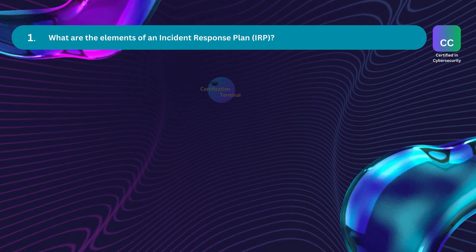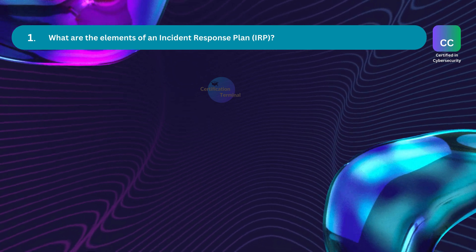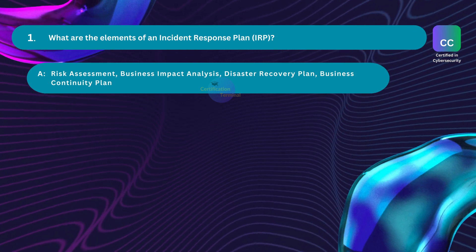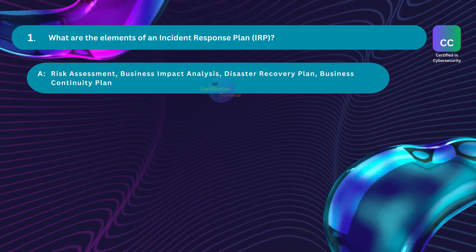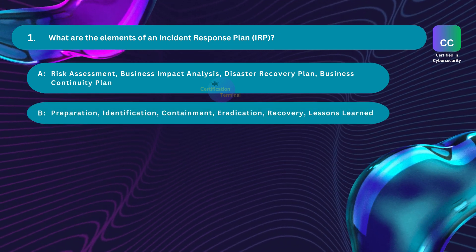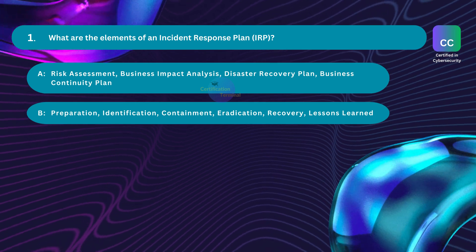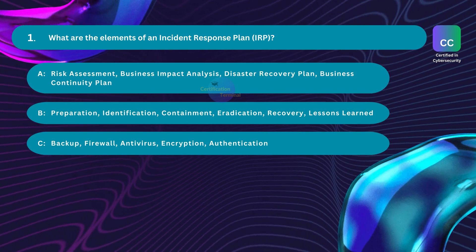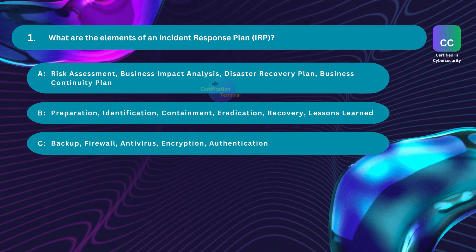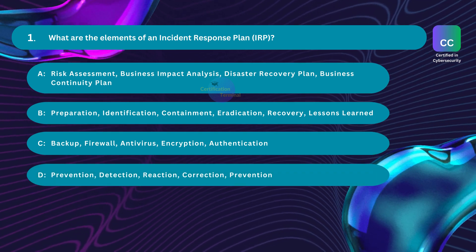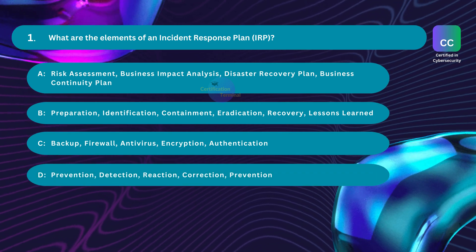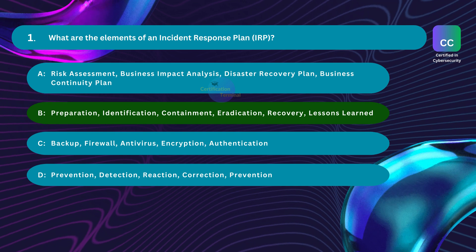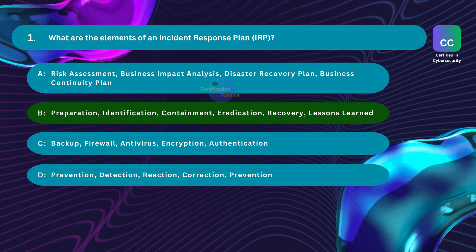Question number one: What are the elements of an incident response plan? Option A: risk assessment, business impact analysis, disaster recovery plan, business continuity plan. Option B: preparation, identification, containment, eradication, recovery, lessons learned. Option C: backup, firewall, antivirus, encryption, authentication. Option D: prevention, detection, reaction, correction, prevention. The correct answer is Option B — preparation, identification, containment, eradication, recovery, lessons learned.